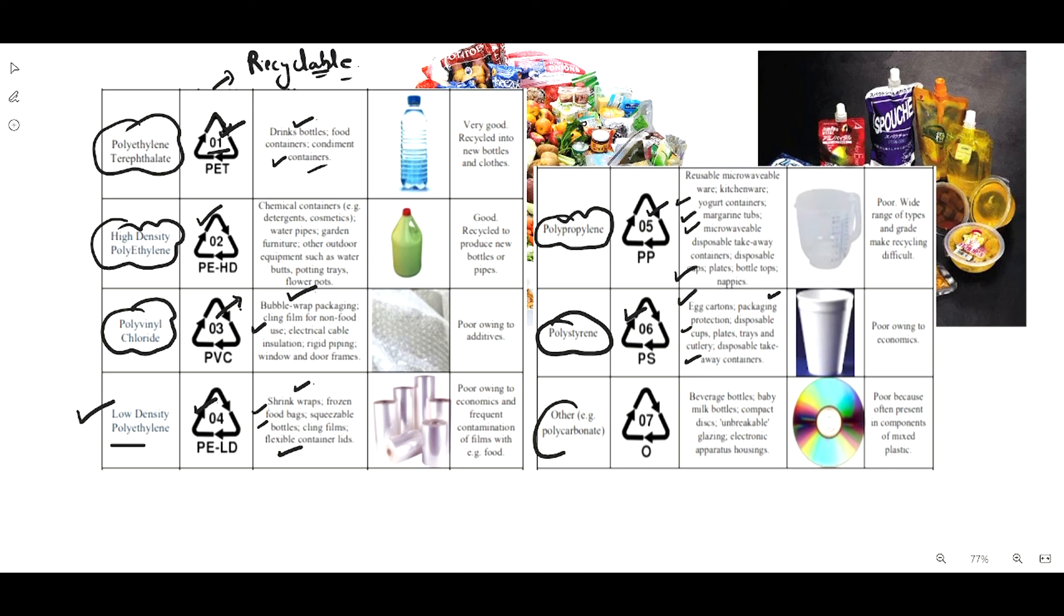Other plastic materials include polycarbonate, which comes under code 07. It's used for beverage bottles, baby milk bottles, compact discs, and unbreakable glazing for electronic apparatus housings. These are the basic plastics used majorly in the food industry for food packaging. That's all for today.